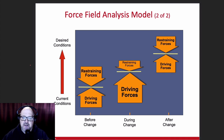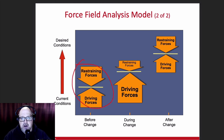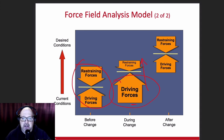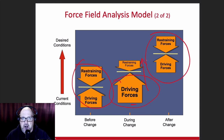When we look at the force field analysis model, you'll see that at the point prior to change, the restraining forces and the driving forces are somewhat mitigated by each other — there's equal force on both sides, with some fluctuation. But any significant change will require the organization to create an imbalance, more often on the driving force side. The driving force actually has to become greater than the restraining force for the organization to see any movement or momentum. Then, over time, when that change has concluded, the driving force and restraining force come back together in a harmonious relationship.